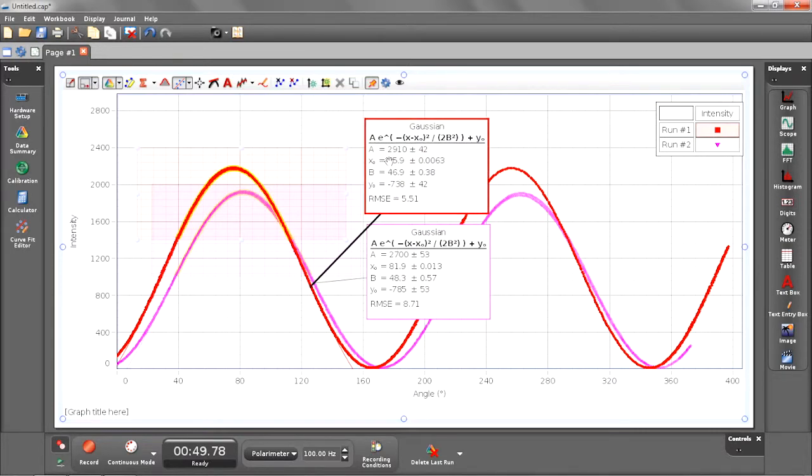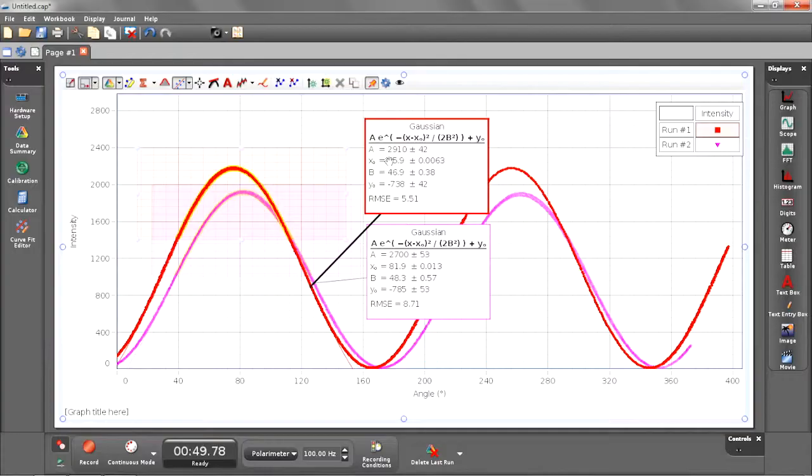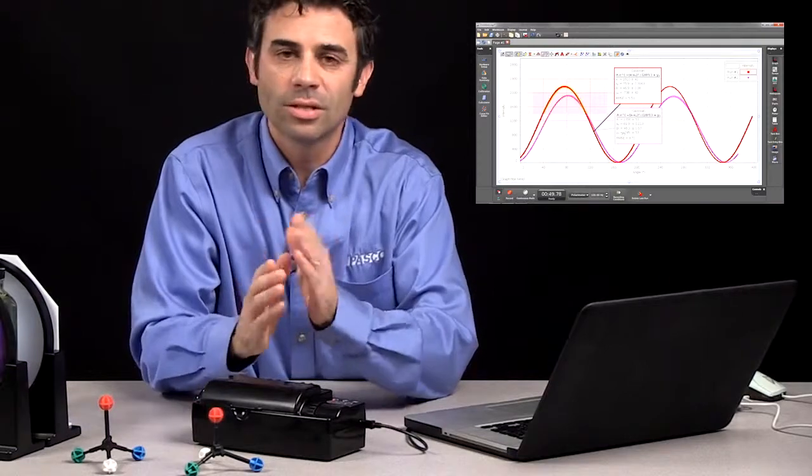And now I have my Gaussian fit for both of those samples. So my blank water, the sort of zeroing or blanking based on the water was at 75.9 degrees. And the rotation for the sample of sugar was at 81.9 degrees. So it looks like based on the concentration of sugar in there, I had a 6 degree rotation.